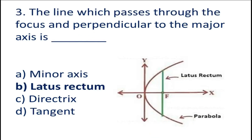Question number 3: The line which passes through the focus and is perpendicular to the major axis is called blank. A. Minor axis, B. Latus rectum, C. Directrix, D. Tangent. Friends, we know — and you can see in the figure — the latus rectum passes through the focus and is perpendicular to the major axis. So latus rectum is the right answer. Minor axis, directrix, and tangent are all known to not be the answer.